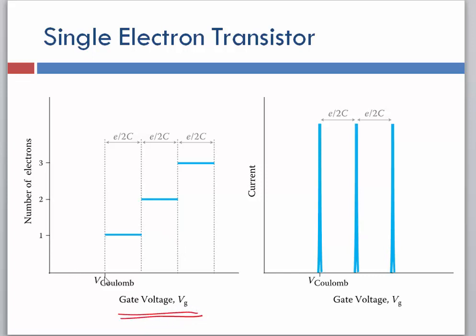Now we know that we need to have some gate voltage that's equal to V_Coulomb, which again we said was equal to the charge on an electron divided by two times C_dot.